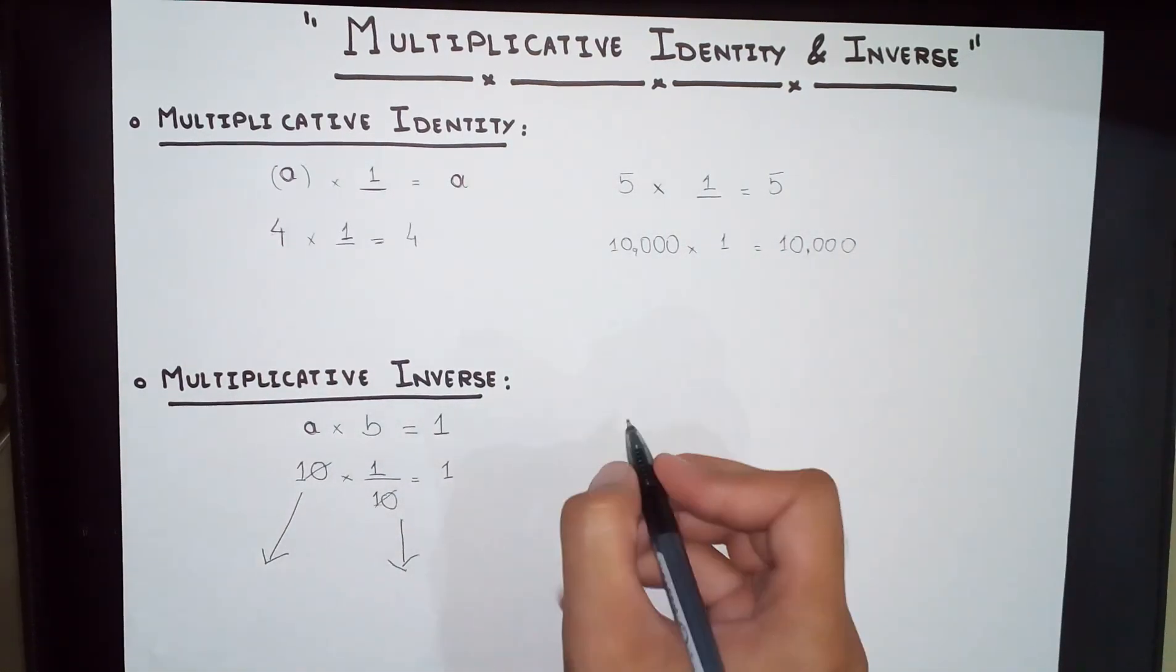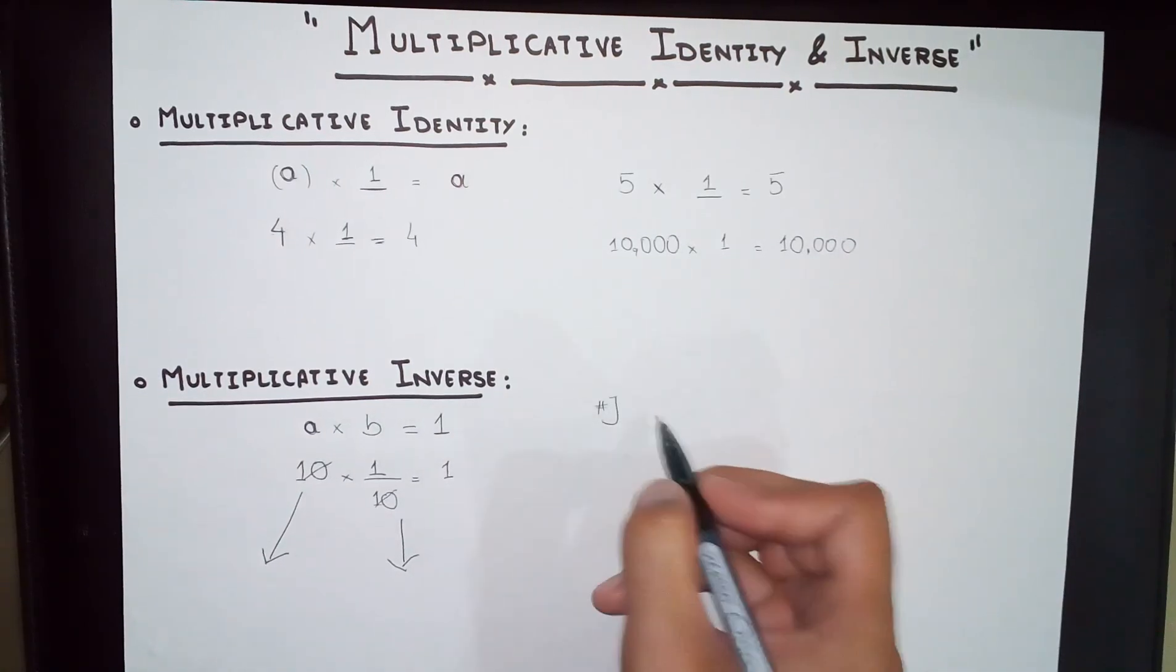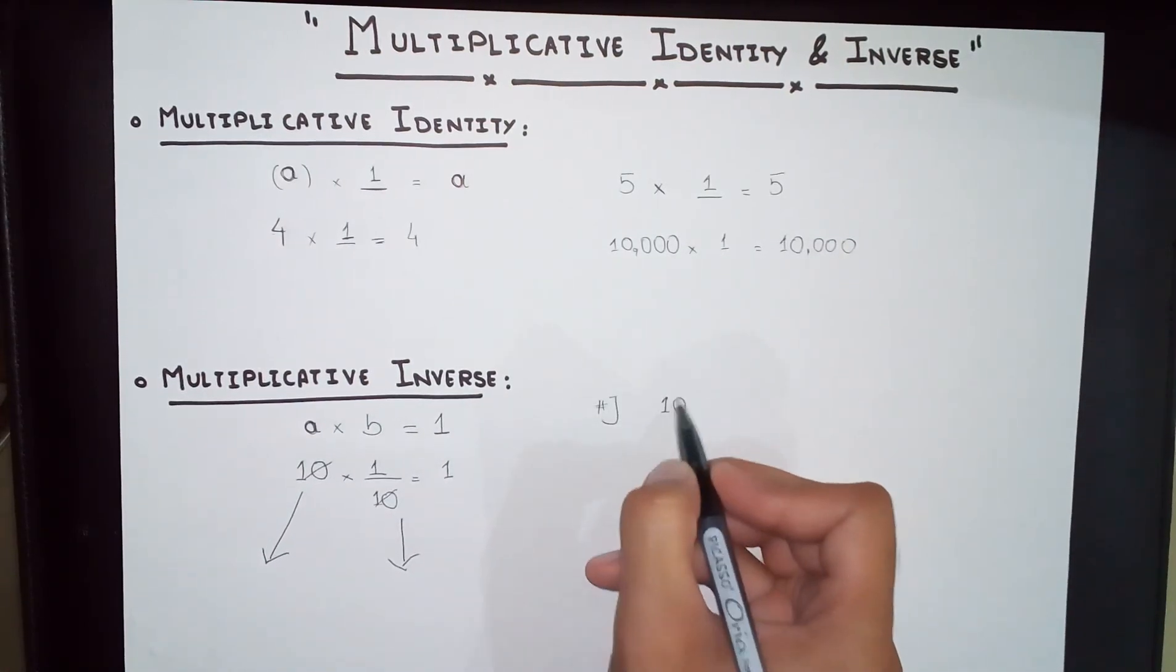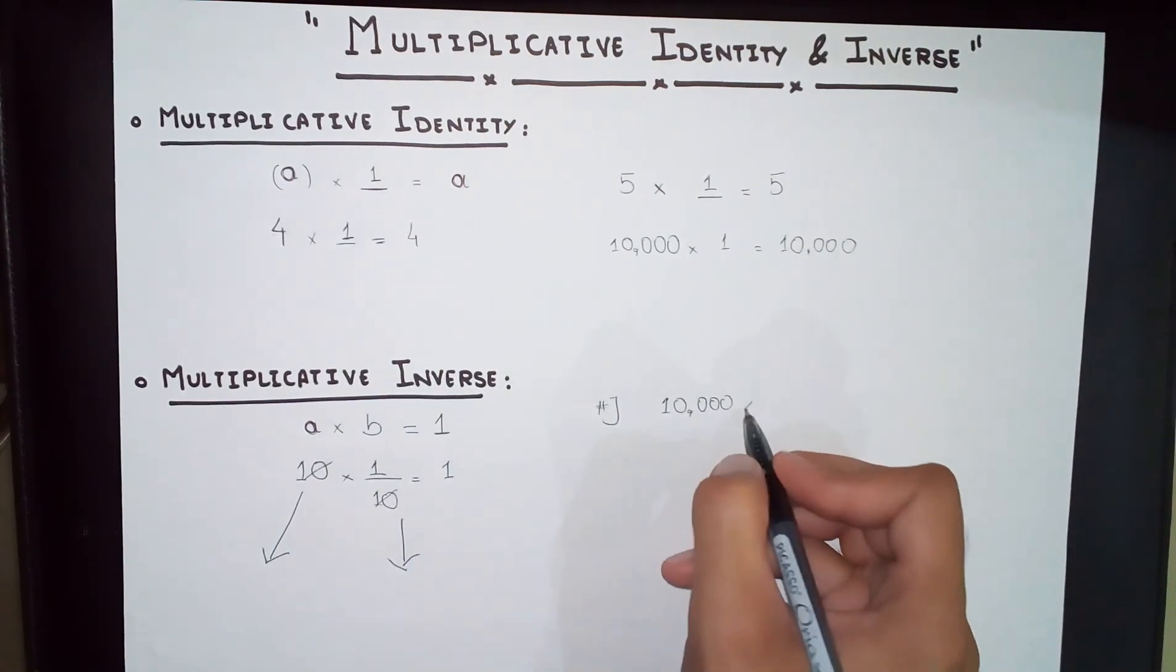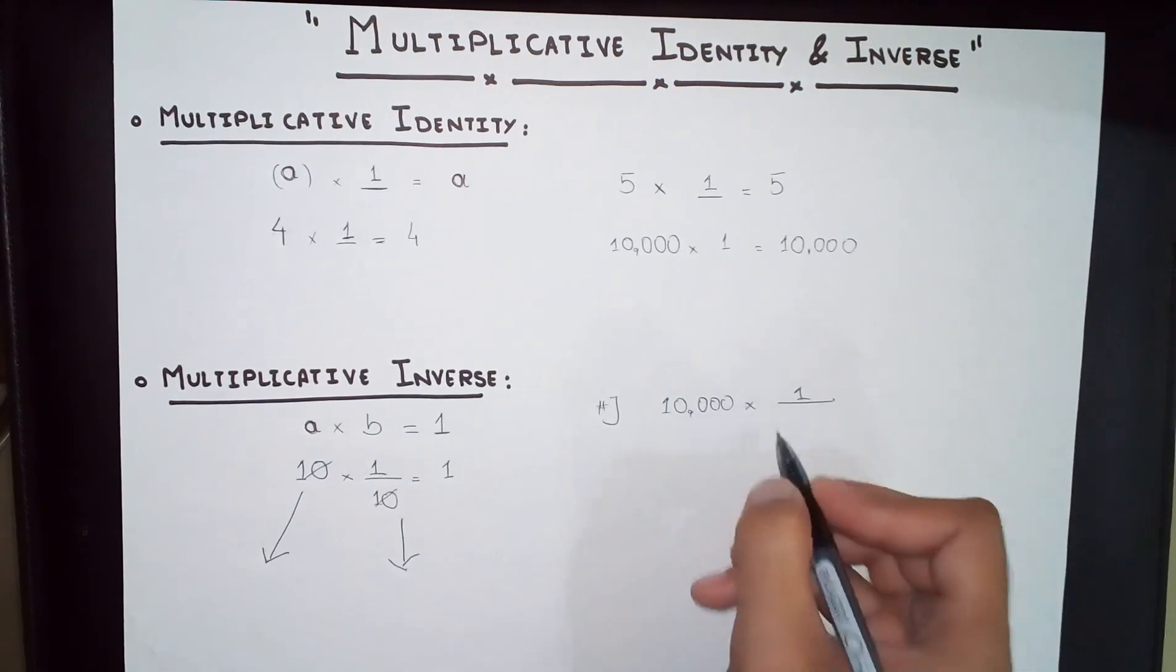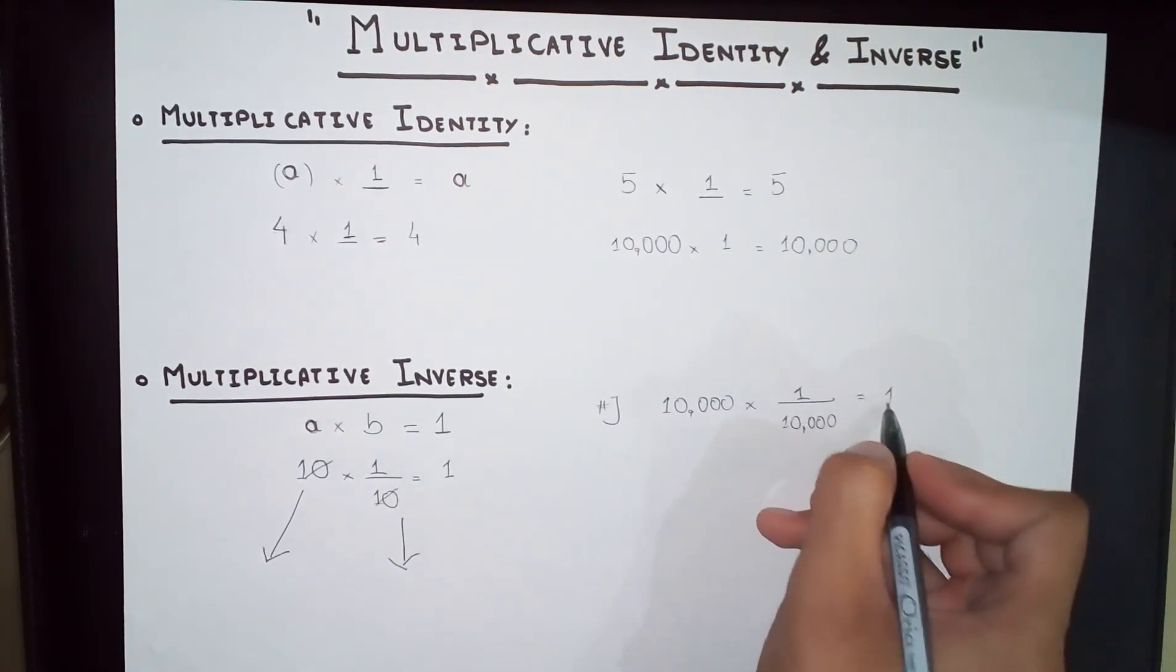Now, over to multiplicative inverse. What is the multiplicative inverse of 10,000? The multiplicative inverse of 10,000 is 1 over 10,000. Because when you multiply both of them, you get 1.